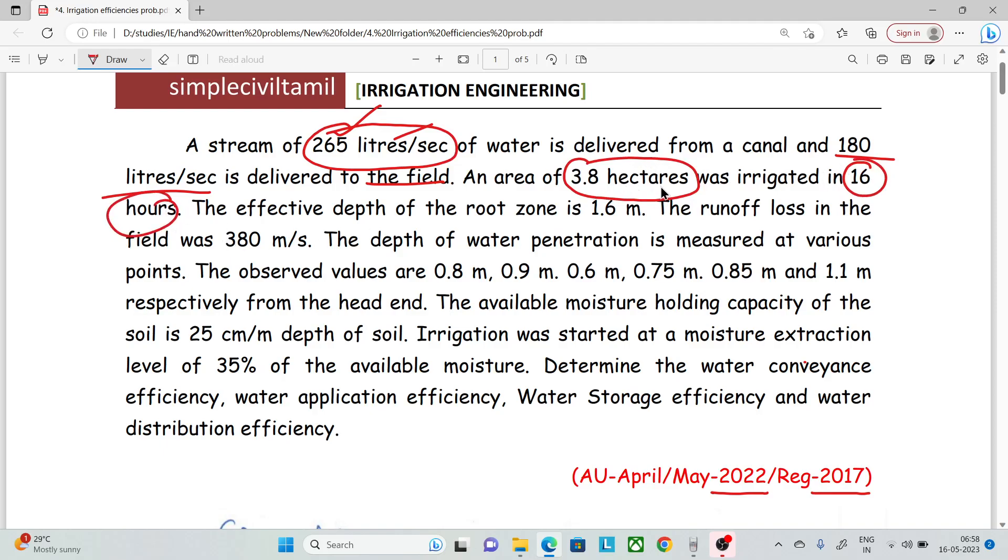The effective depth of the root zone is 1.6 meters. The runoff loss in the field was 380 cubic meters. The water penetration is measured at various points. The values are 0.8 meters, 0.9 meters, 0.6 meters, 0.75 meters, 0.85 meters, and 1.1 meters.